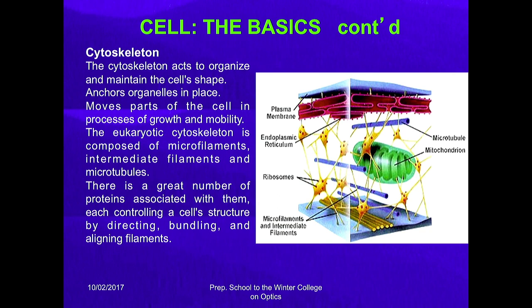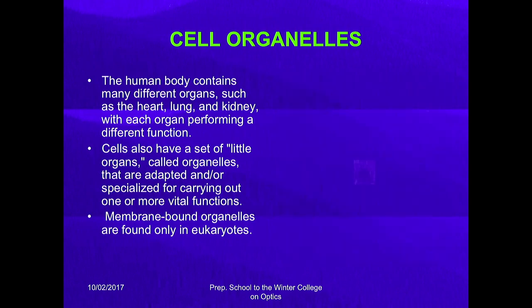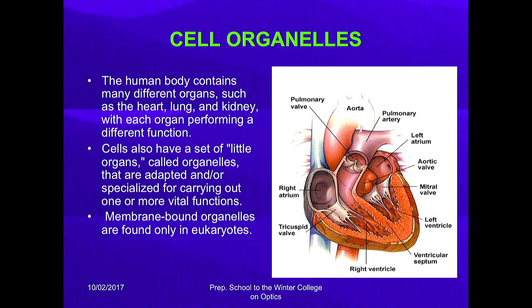The plasma membrane and filaments including microtubules give shape to the eukaryotic cell. There is a great number of proteins associated with them, each controlling cell structure by directing, bundling, and aligning filaments. Just as the human body contains many different organs each performing a different function, similarly the cell has organelles — small specified structures like the mitochondria, Golgi apparatus, and others. Membrane-bound organelles are found only in eukaryotic cells because prokaryotic cells do not have any membrane-bounded structures or even a nucleus.